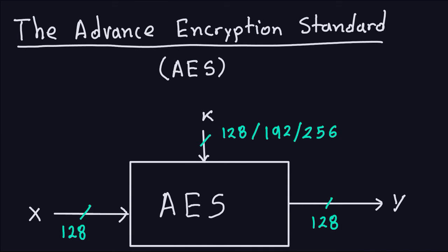We're going to discuss the Advanced Encryption Standard, or AES, which is the symmetric cipher applicable today — the one that modern cryptography uses. The DES, which we saw earlier, has been cracked, so it has problems. For real applications today, we use AES. We're going to look at its internal structure and see how it works, and then we'll see how it is implemented in Java.